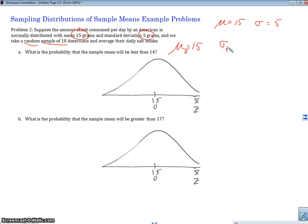And σ of my sampling distribution, σ x̄, is going to be σ over square root of n. Okay, so I'm going to go ahead and calculate that out right now. 5 over the square root of 10 is going to be 1.58.